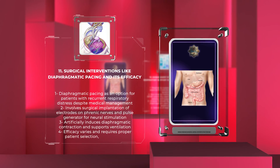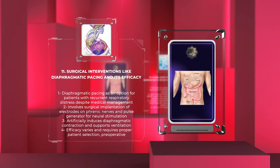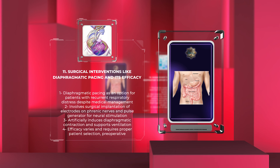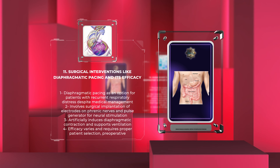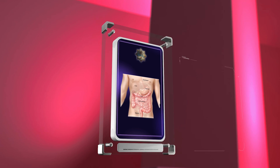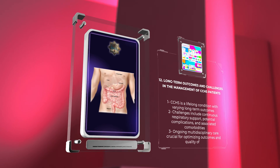Diaphragmatic pacing is a viable option for patients with CCHS who experience recurrent respiratory distress despite optimal medical management. It involves surgical implantation of electrodes on the phrenic nerves and a pulse generator for neural stimulation, artificially inducing diaphragmatic contraction to support ventilation. Although diaphragmatic pacing has shown promise in improving respiratory function and quality of life, its efficacy varies, and proper patient selection, thorough pre-operative assessment, and long-term follow-up are crucial.